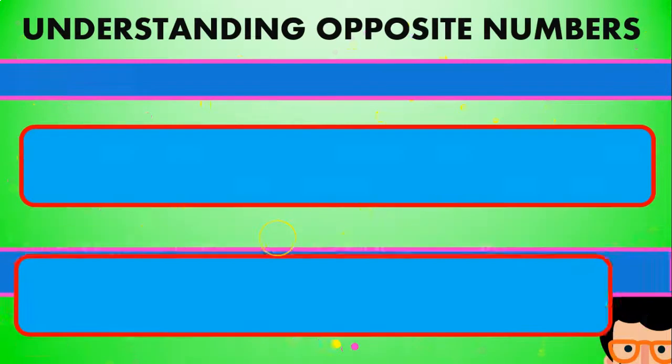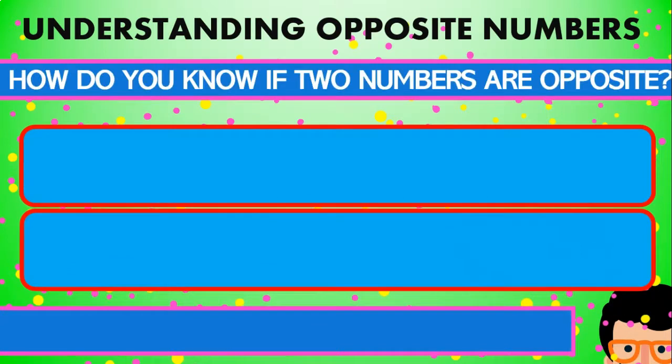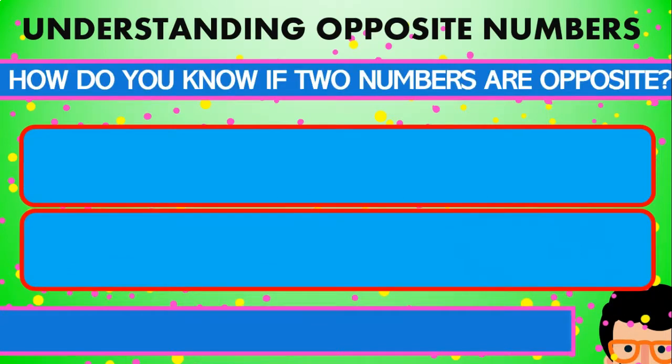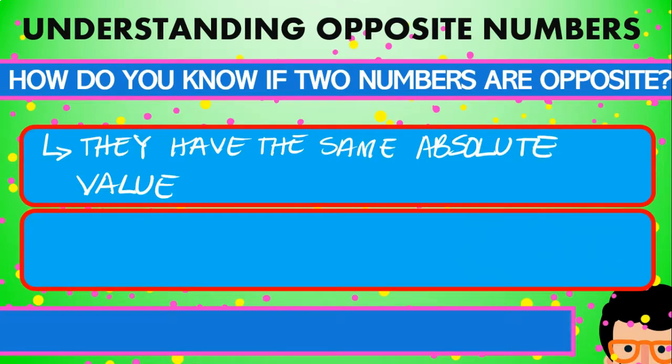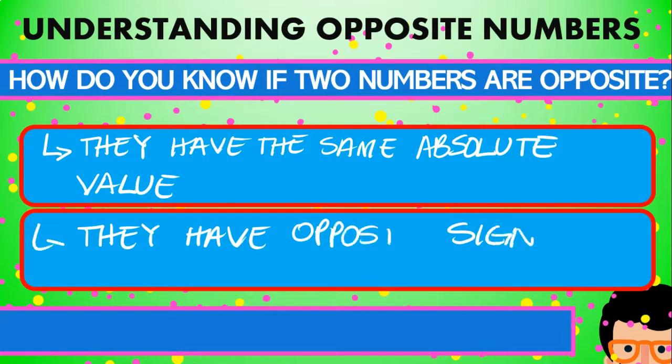Let's look at this. How do we even know if two numbers are opposite? Well, first of all, they need to have the same absolute value as we saw before. And second of all, they have opposite signs.